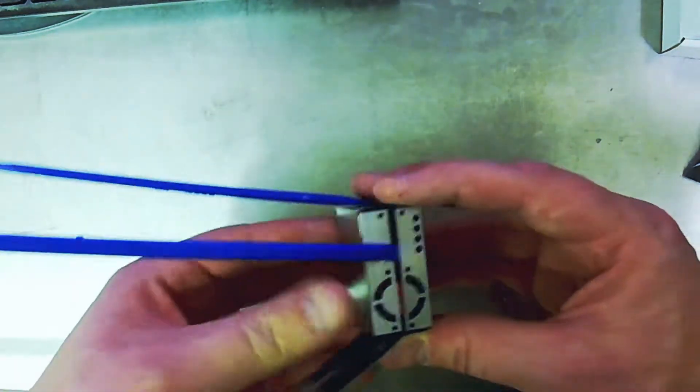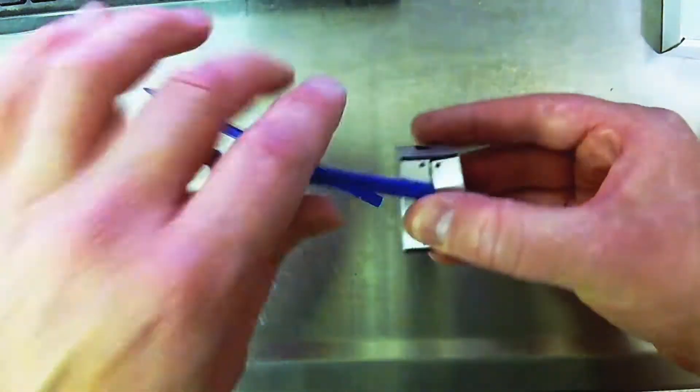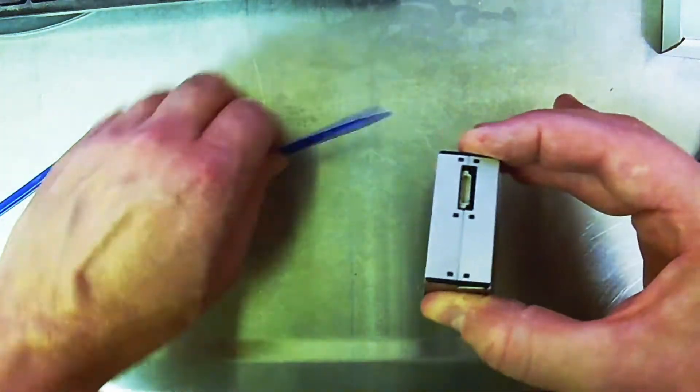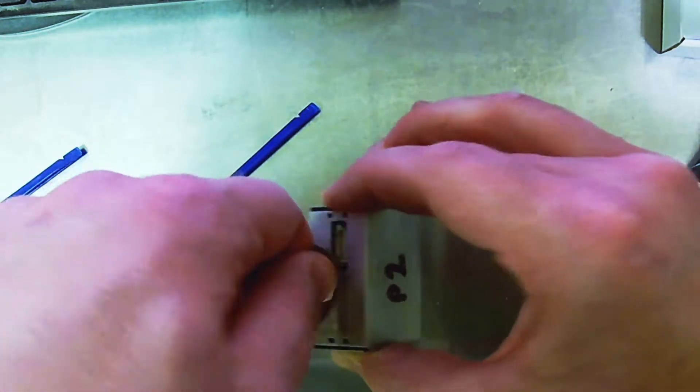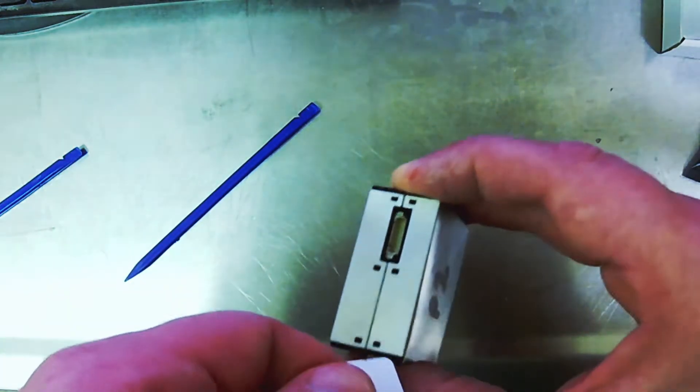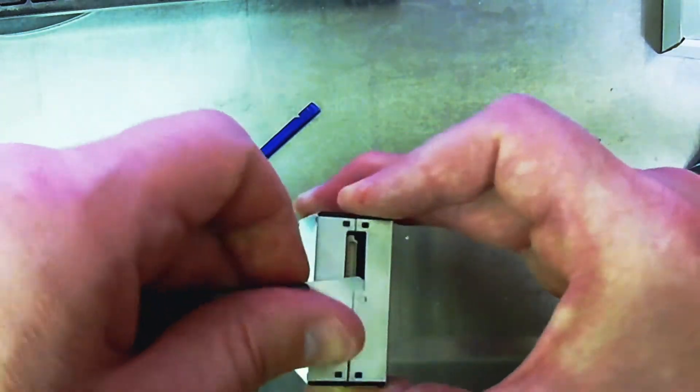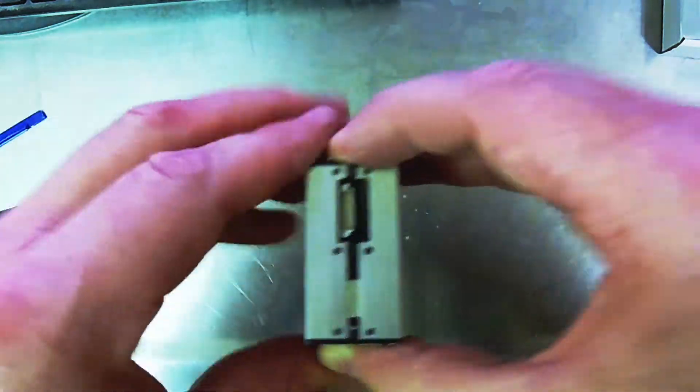Once you get that split, it should start to hinge. You can hold these two sides with your finger and thumb, go to the back here, and get underneath, similar to how you did it before. And that should release that part.